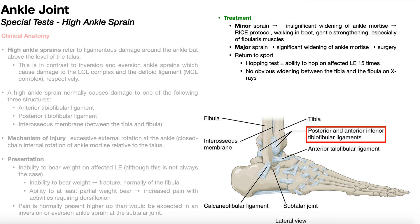Treatment of a high ankle sprain depends on whether it is a minor or major sprain. A minor sprain implies insignificant widening of the ankle mortis, and conservative care is appropriate: initially the RICE protocol in the acute stage — rest, ice, compression, and elevation — progressing to ambulating in a walking boot, and eventually gentle strengthening of the ankle muscles, especially the fibularis longus and brevis. A major sprain implies significant widening of the ankle mortis and significant separation of the tibia and fibula, and surgery is often required to correct it.